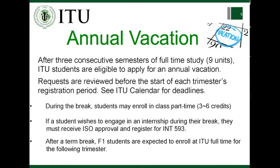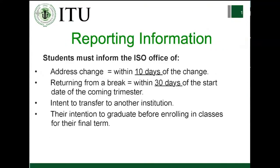After three consecutive trimesters of full-time study, you can request an annual vacation if you qualify. You need to be enrolled in three consecutive trimesters of at least nine credits each. During the annual vacation break, you can enroll in part-time classes — three or six units. You can also take an internship if you wish. After the annual vacation ends, you must register for the full course load the following trimester.